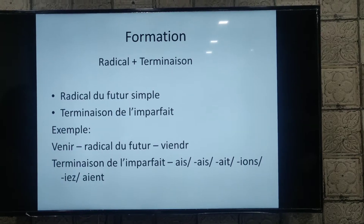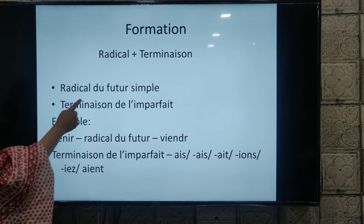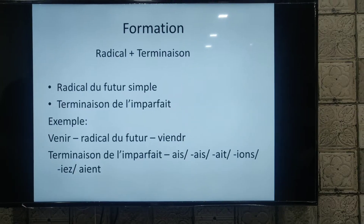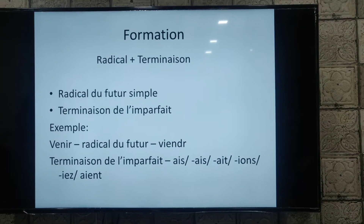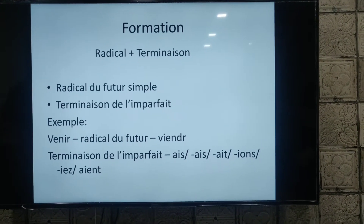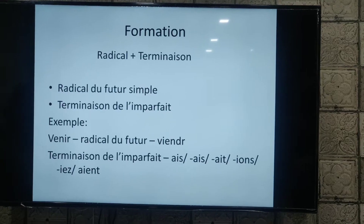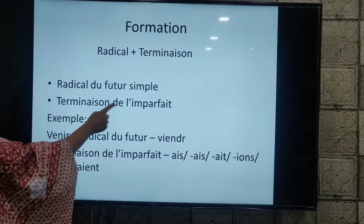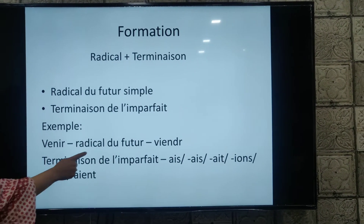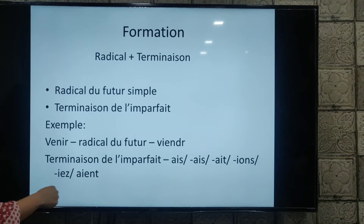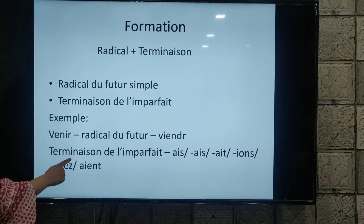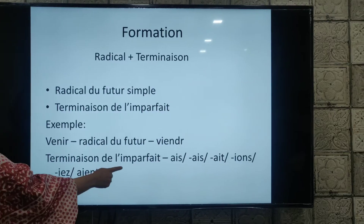So radical — we take the radical of the future simple in this tense. For example, aller in future simple is ir-, être in future simple is ser-, and the ending of imparfait. For example, venir — the root form of venir will be viendri-.